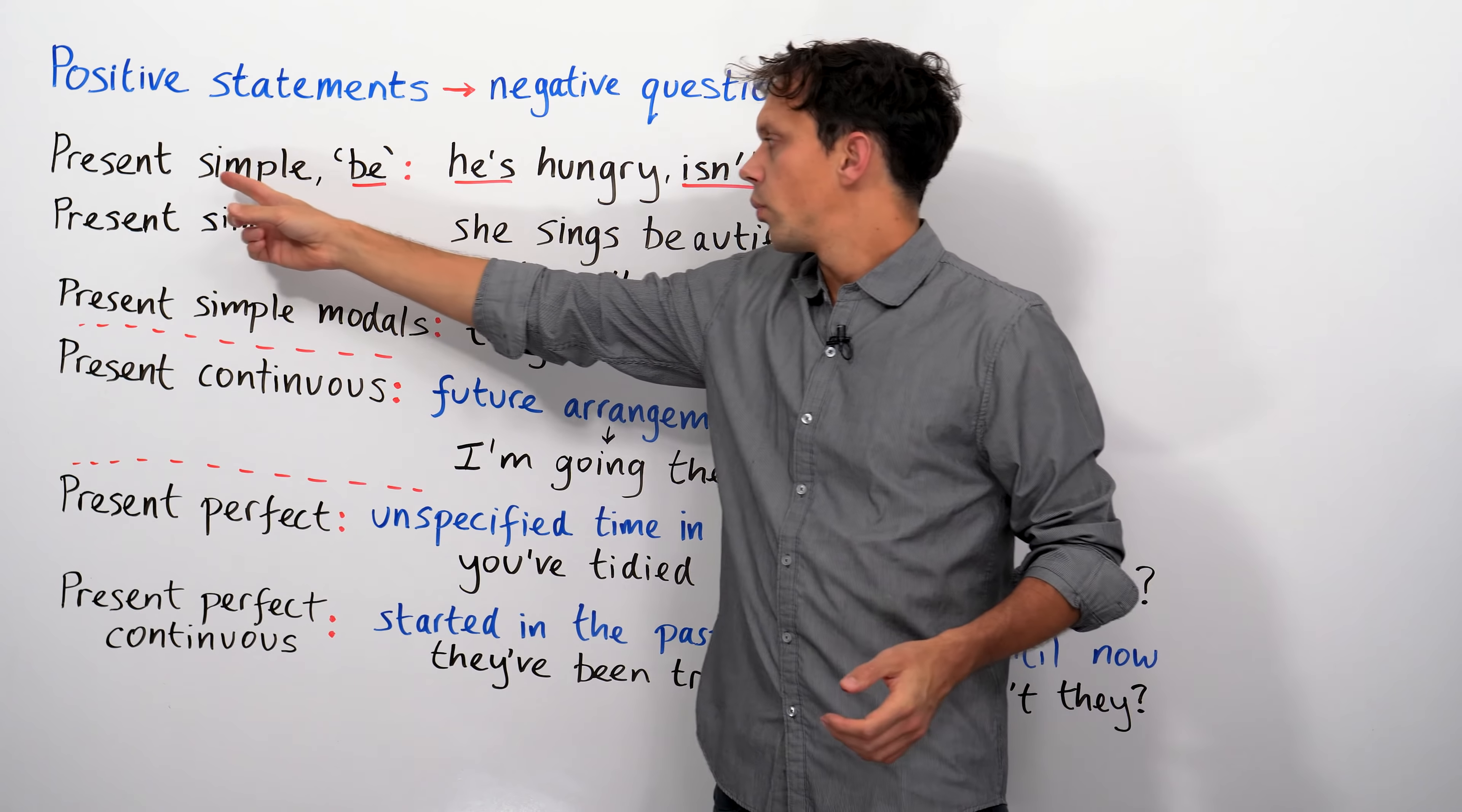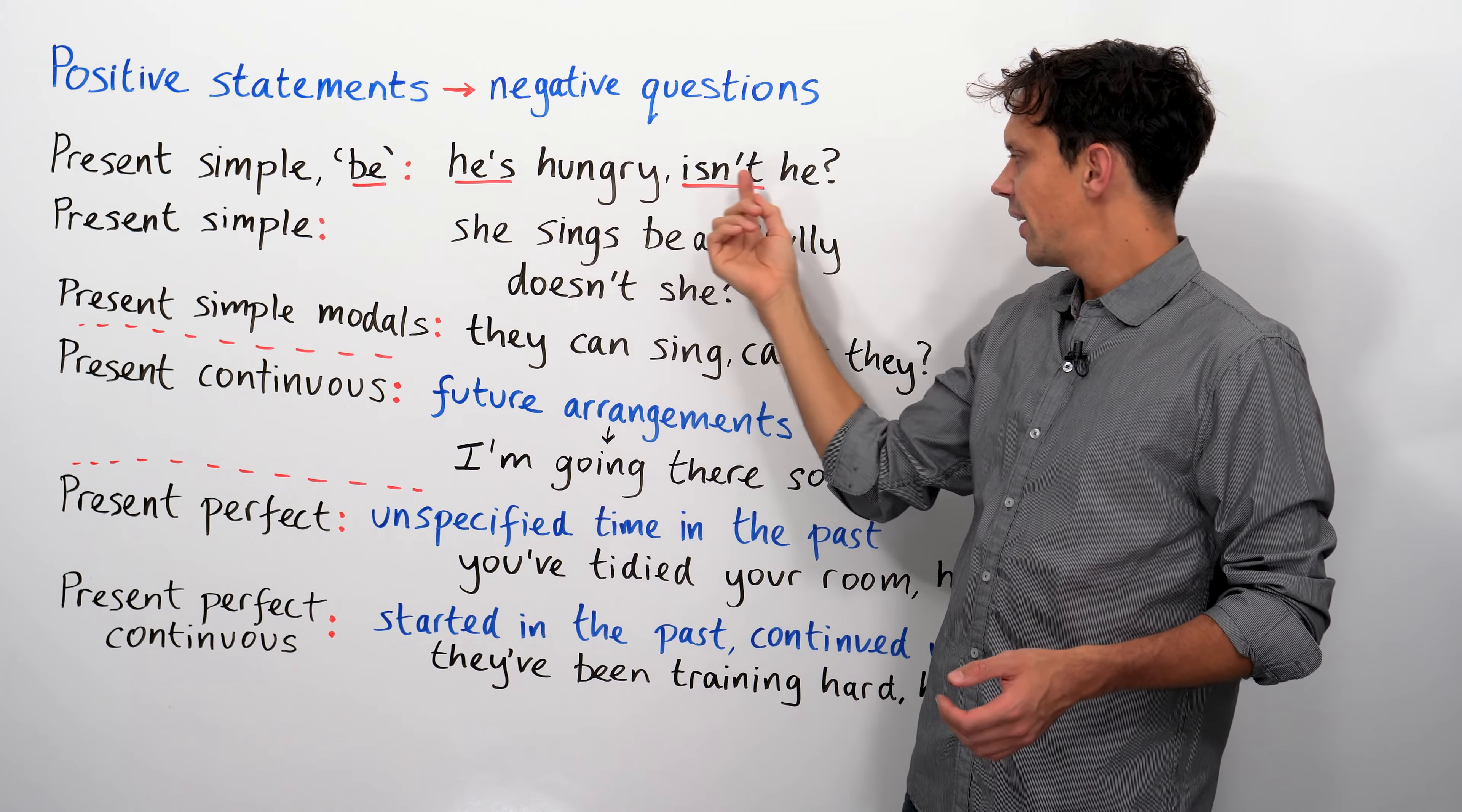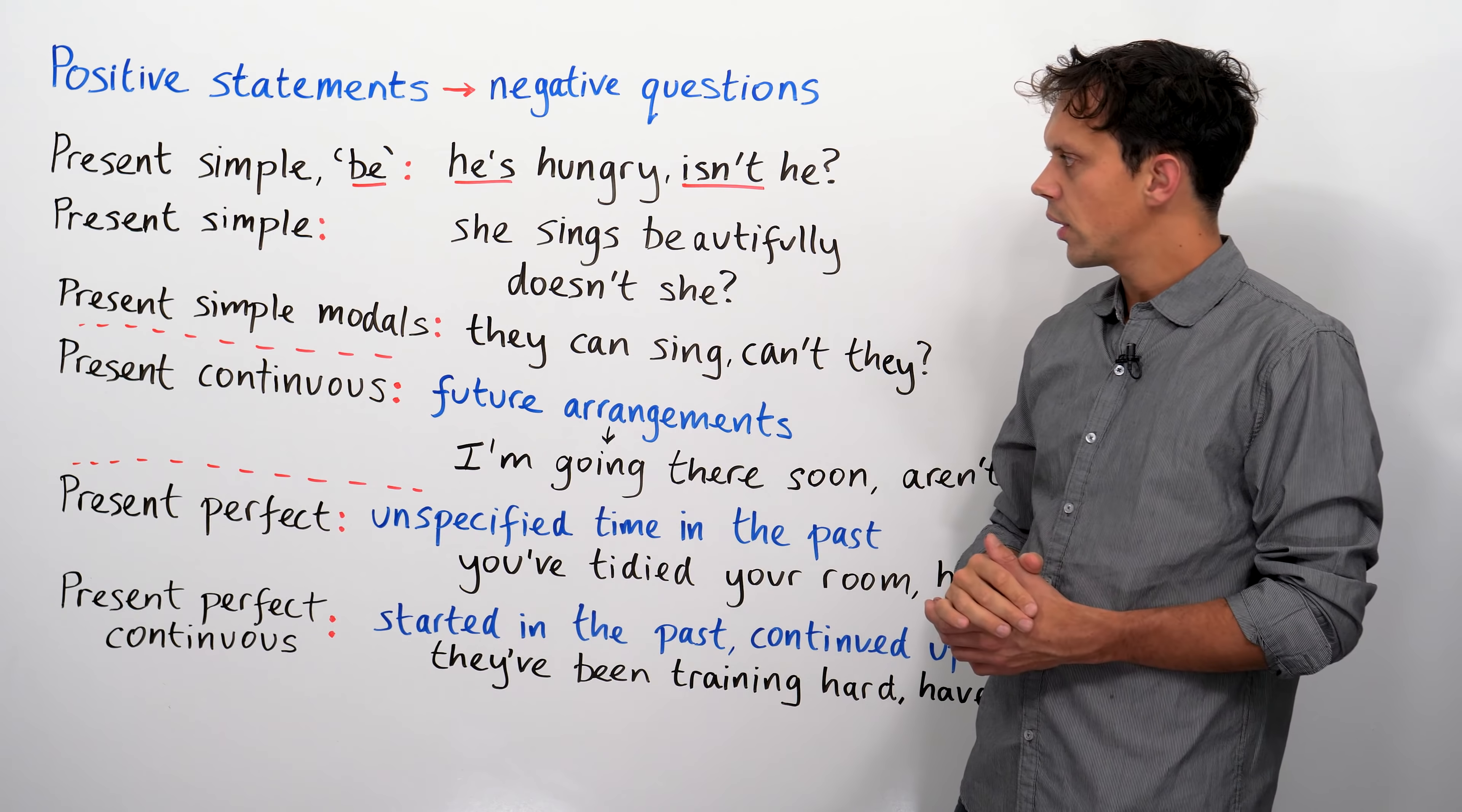Now, the verb to be in the present tense, we would say, he's hungry, isn't he? Or she's thirsty, isn't she? Or I'm Benjamin, aren't I? They're Canadian, aren't they?